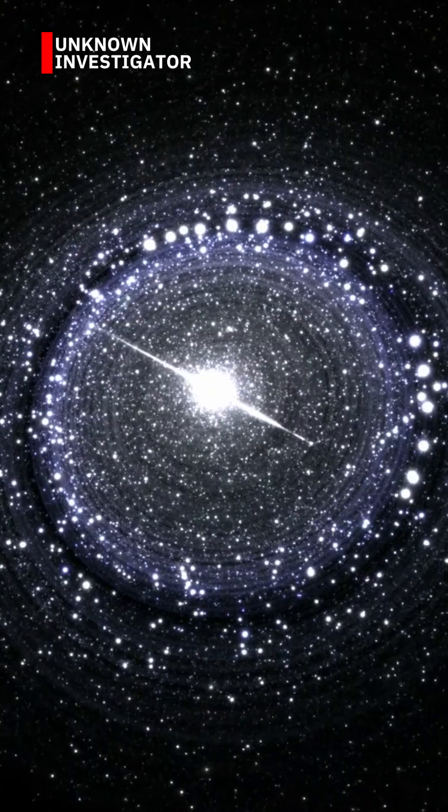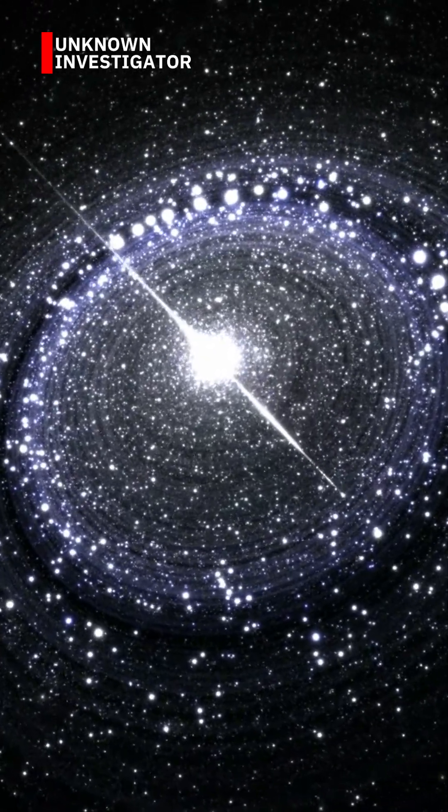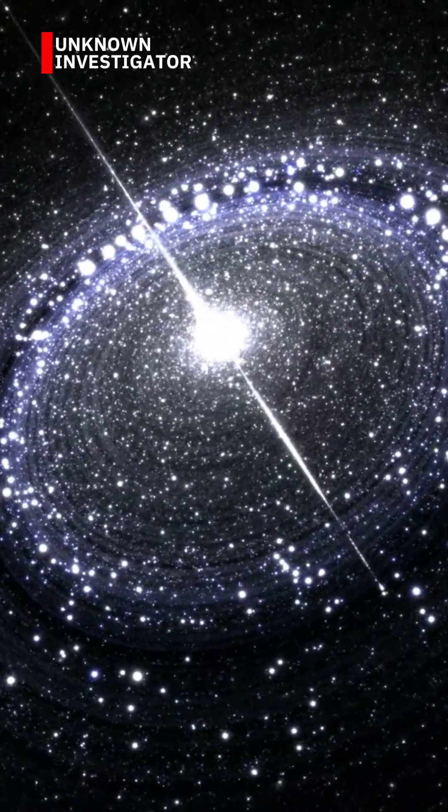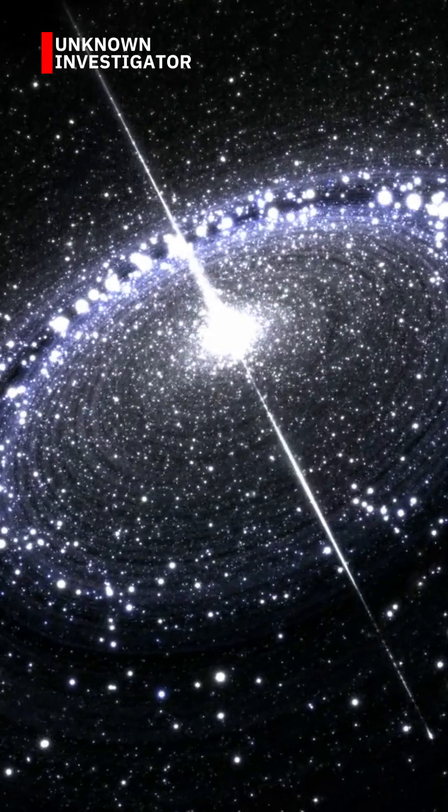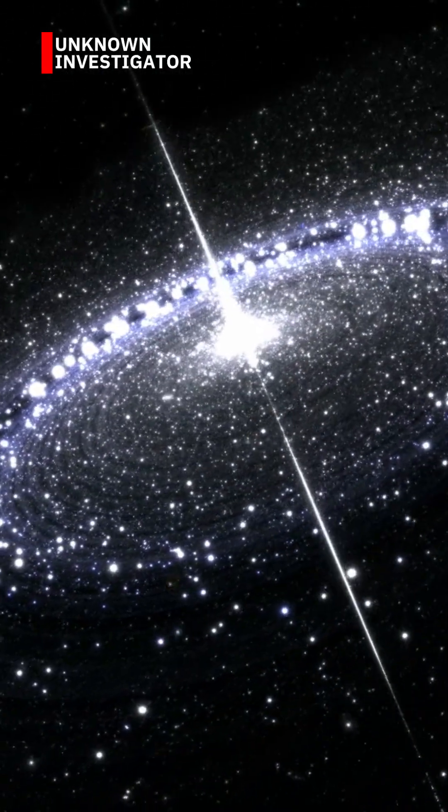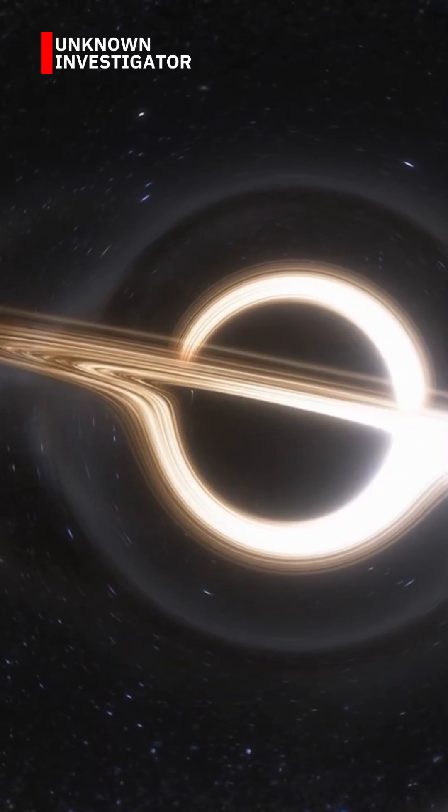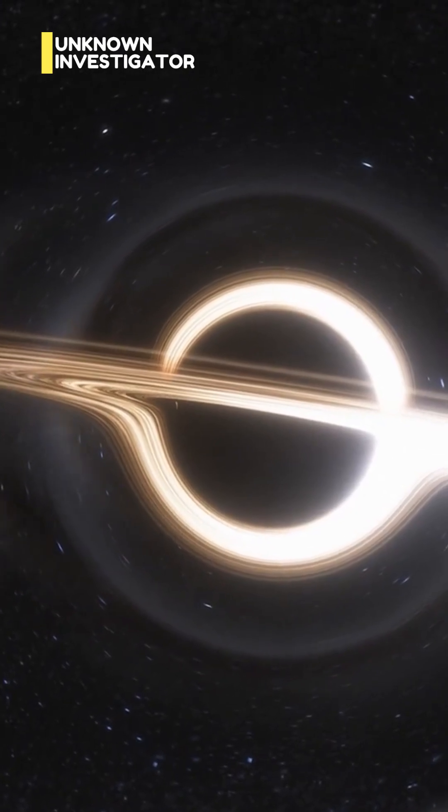A black hole forms when a massive star collapses under its own gravity. What's left is a region where gravity is so strong, not even light can escape, but at the very center, the rules of physics start to fall apart.